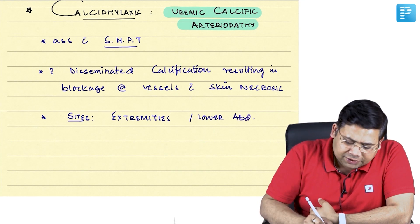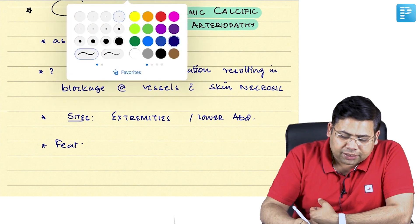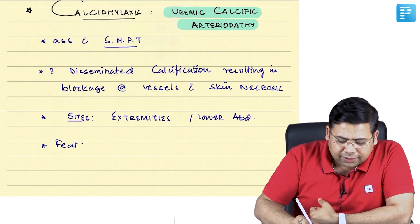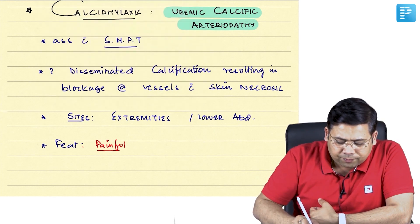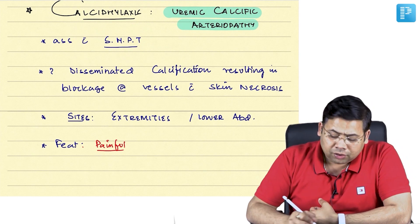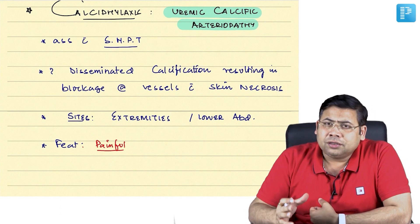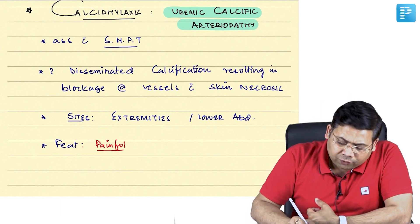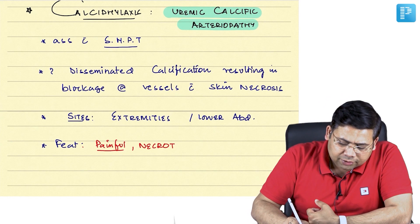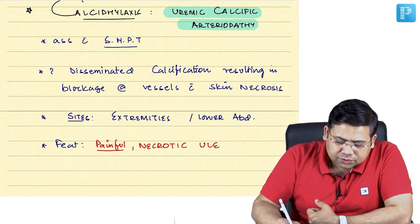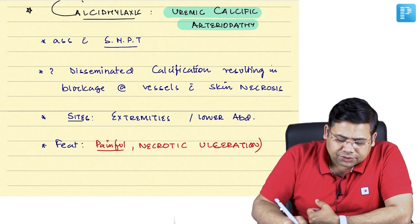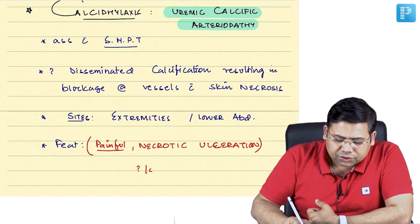Now if you talk about the features, the standard feature is painful calcific deposition resulting in generalized gangrene of the overlying skin. So painful necrotic ulcerations, and why these ulcerations happen? Because of the ischemia.